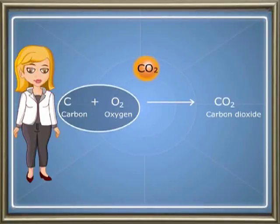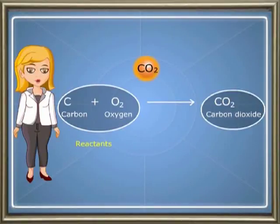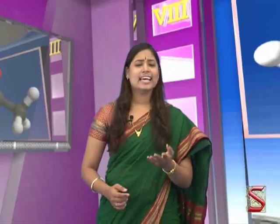The substances which react are called reactants, which are given on the left side of the chemical equation. Substances which are formed are called products and are given on the right side of the equation. Let us see a few chemical reactions and their corresponding equations.